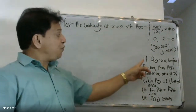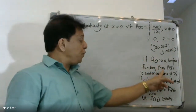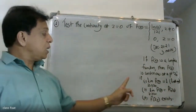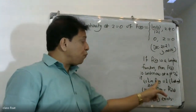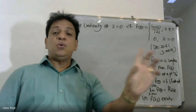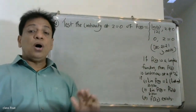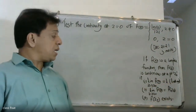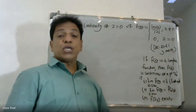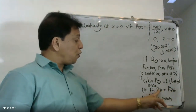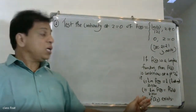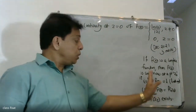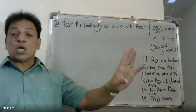If f of z is a complex function, then f of z is continuous at a point z-naught if it satisfies three conditions. The first condition is: the limit as z tends to z-naught of f of z equals some unique value L — that is, the limit exists. Additionally, f of z-naught must exist, and the limit must equal f of z-naught.